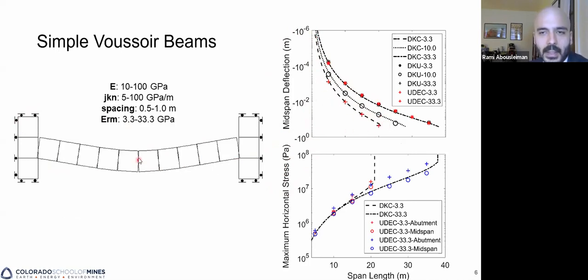And initially they did not match, which led us to conduct a sensitivity analysis and find that the interaction between the block rounding as well as the size of the finite difference zones that make up each block significantly impacted the analytical solution's error, or the model error rather, to the analytical solution.